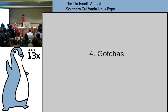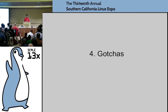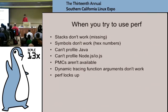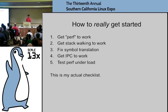Flame graphs: the x-axis is population sorted alphabetically — not passage of time. Wider means more times present in a sample. The y-axis is stack depth. Colors for most flame graphs are random to differentiate frames. There are also flame graph modes for identifying software types and for non-regression testing, where red highlights code paths that have grown and blue highlights code paths that have shrunk. When I actually tried to use perf events, things turned out to be tricky — stacks don't work, symbols don't work for JIT-compiled code like Java and Node.js.